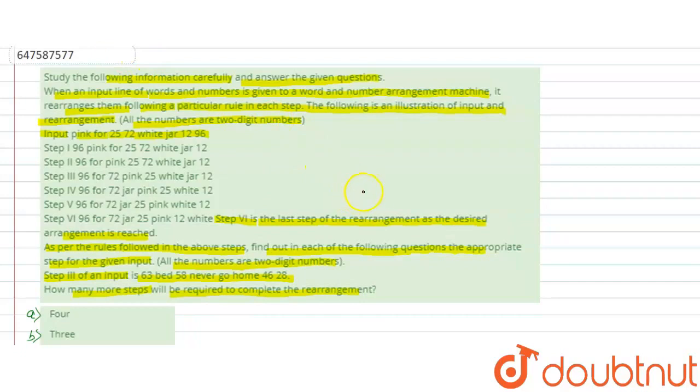The machine input question is step by step arranged. First, let's see how the last step is arranged. The largest number 96 is placed first on the left, then the numbers are arranged in place.